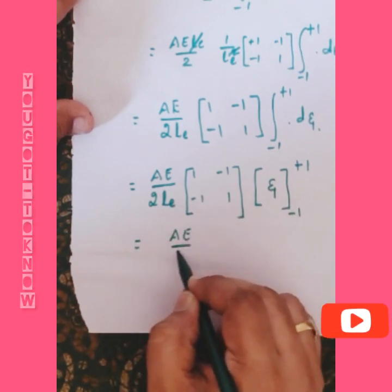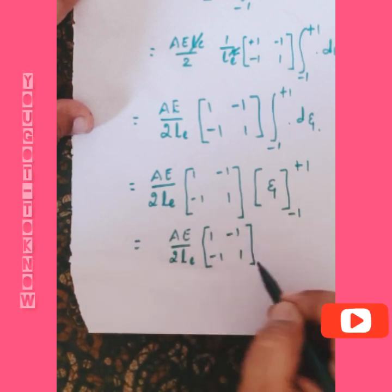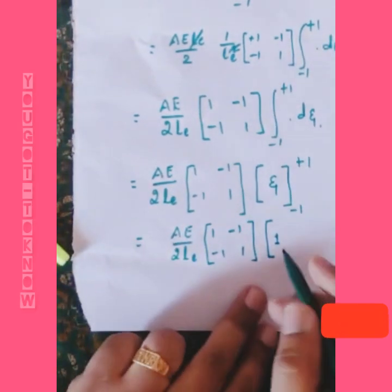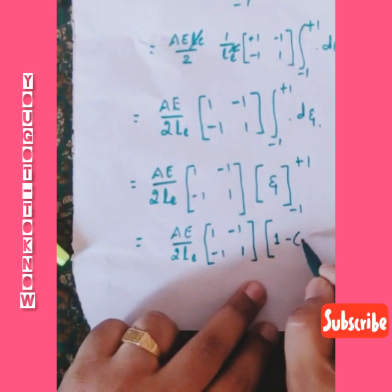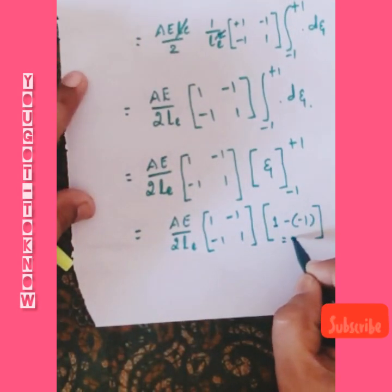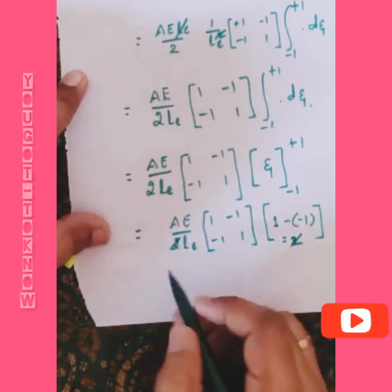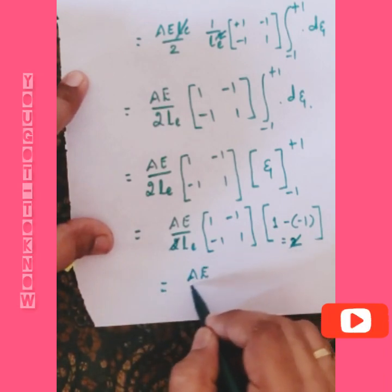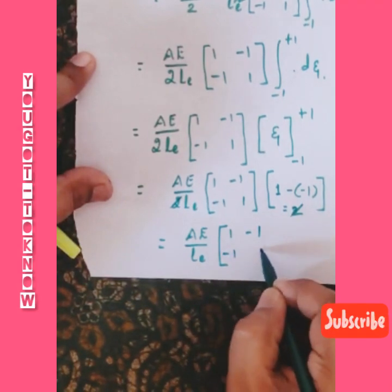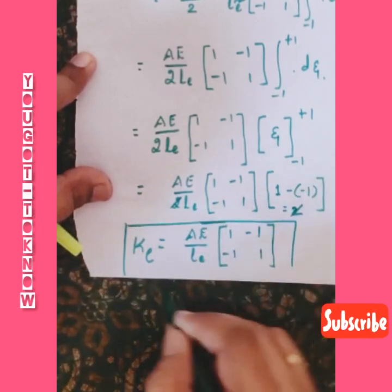Evaluating the integral: applying the upper limit of plus 1 minus the lower limit of minus 1 gives 2. The 2 in the numerator and the 2 in the denominator cancel. Therefore, the elemental stiffness matrix Ke equals AE/le times [1, -1; -1, 1]. This is the elemental stiffness matrix for the one-dimensional bar element.